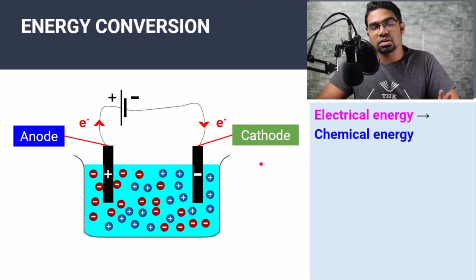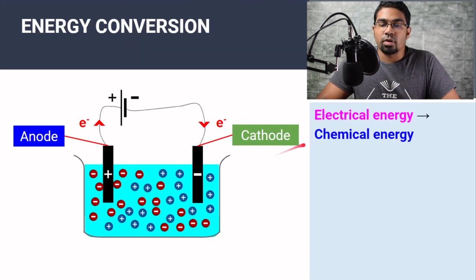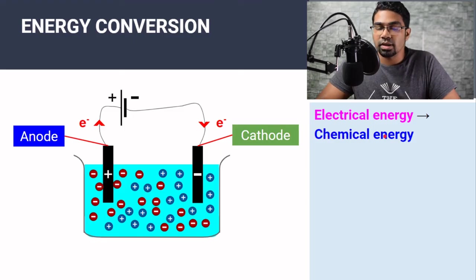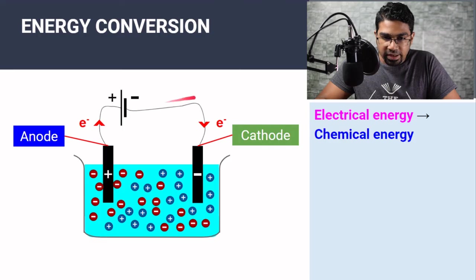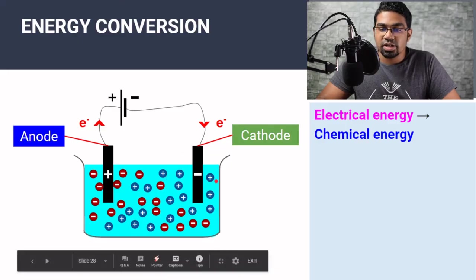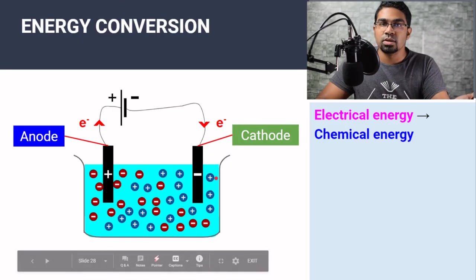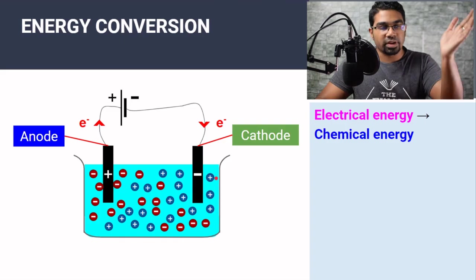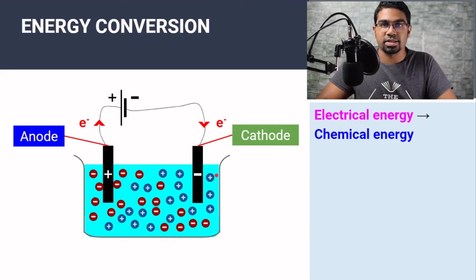The energy conversion that takes place in an electrolytic cell is from electrical energy to chemical energy. Here we start with supplying electrical energy to the external circuit, and then when the ions are discharged, they turn into chemical energy. So from electrical energy to chemical energy.